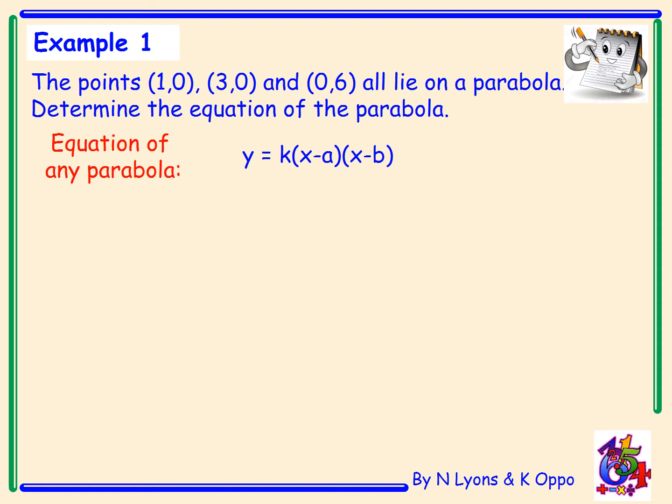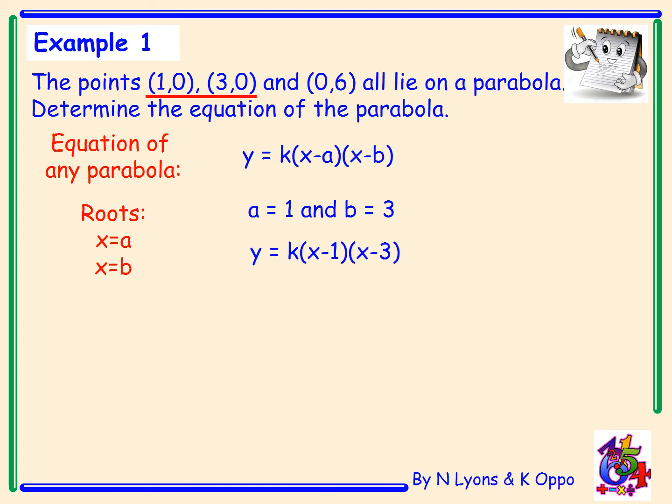What values are a and b? They're just the roots. The roots are where it cuts the x-axis — it cuts at x equals 1 and x equals 3. So a equals 1 and b equals 3. It doesn't matter which way round you put the roots; I could have put a equals 3 and b equals 1. When they go into the brackets we're just multiplying two numbers together, so it doesn't matter.